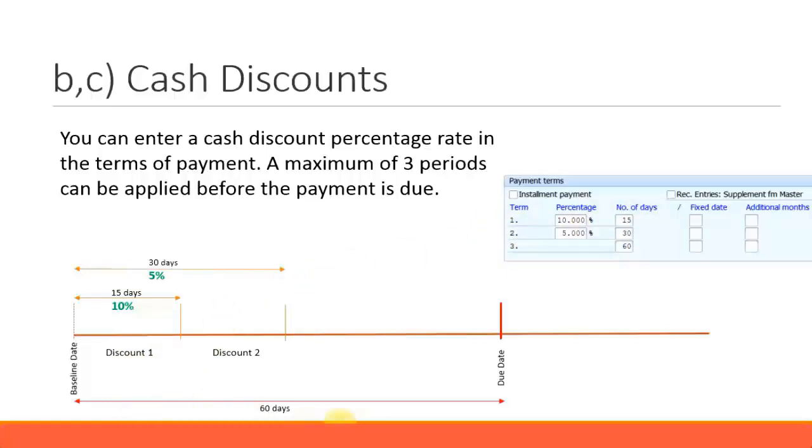In this example, this is your baseline date. For example, if your baseline date is 1st of January 2016, and you are given 15 days to make the payment, and you will get 10% discount if you make the payment within 15 days. So if a customer pays by 15th of January or before 15th of January, they will get a 10% discount.